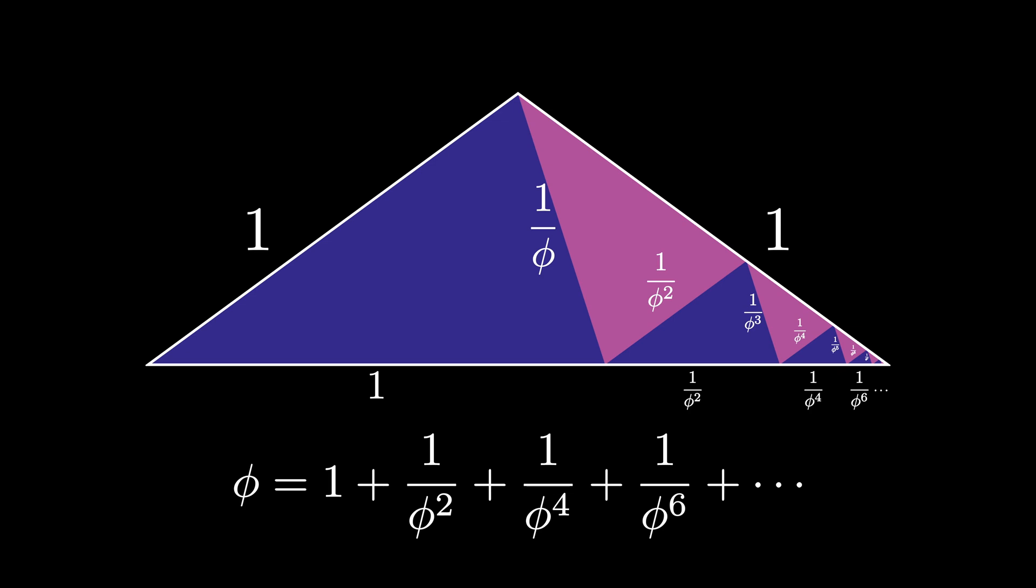This means that the golden ratio is equal to the infinite sum of the reciprocals of the even powers of the golden ratio as shown here.